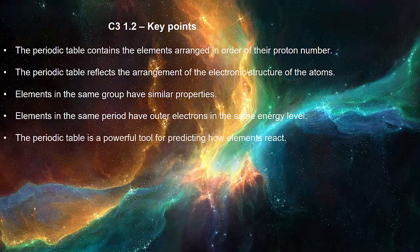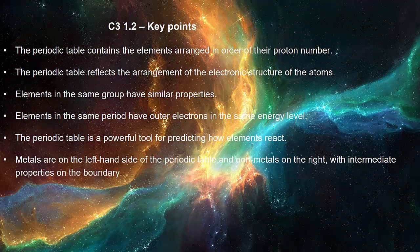The periodic table is a powerful tool for predicting how elements react. Metals are on the left hand side of the periodic table and nonmetals on the right with intermediate properties on the boundary.